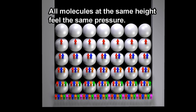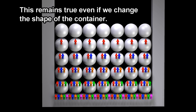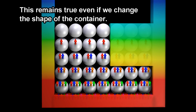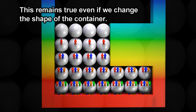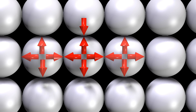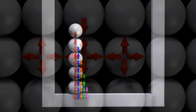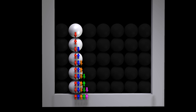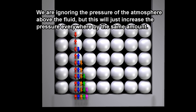All molecules at the same height feel the same pressure. This remains true even if we change the shape of the container. We are ignoring the pressure of the atmosphere above the fluid, but this will just increase the pressure everywhere by the same amount.